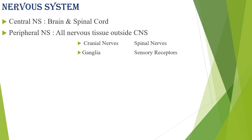Let me activate the laser pointer. In the peripheral nervous system we have cranial nerves, spinal nerves, ganglia, and sensory receptors. We have 12 pairs of cranial nerves — nerves originating directly from the cranium — and spinal nerves originating from the spinal cord. The ganglia is a junction between two nerves, similar to the synapse.